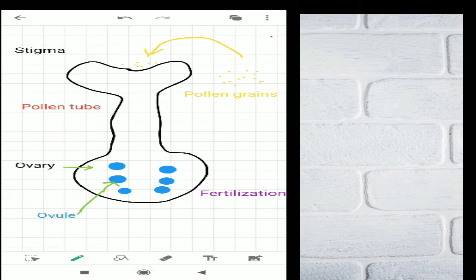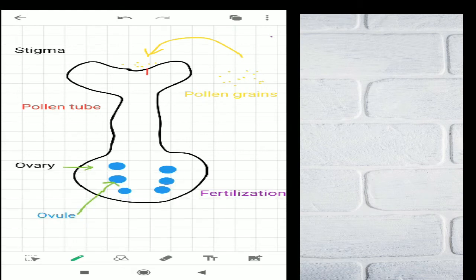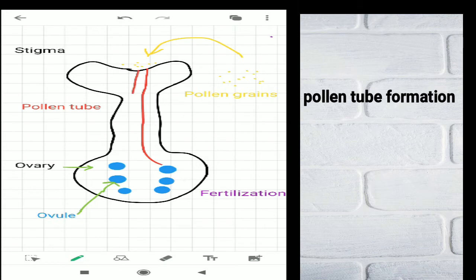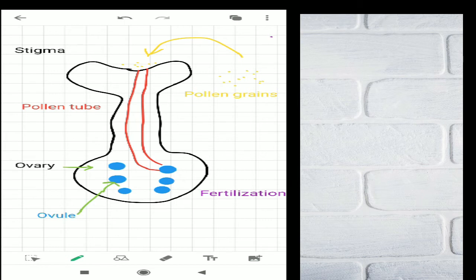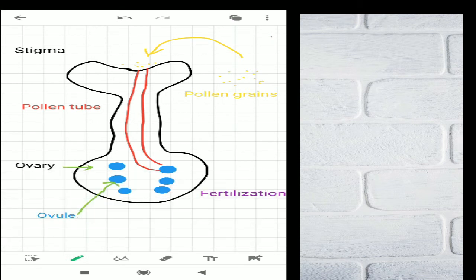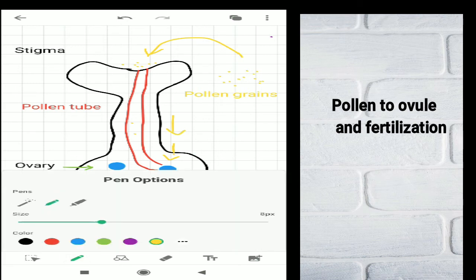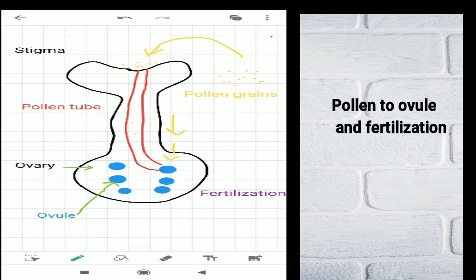From there, a pollen tube forms — I'll denote it in red. The tube forms along the style, and what happens is that the pollen grains move from the stigma down to the ovule, which I'll mark in blue. I'll draw an arrow pointing to the ovule, and the pollen travels to the ovule through the pollen tube, where fertilization occurs.